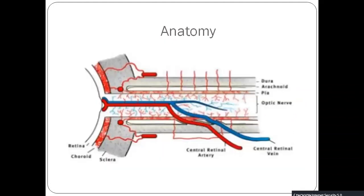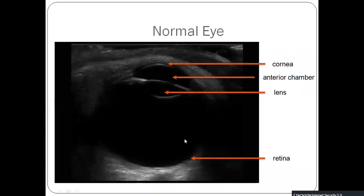As you see here, this is the eye posteriorly, and this is the anterior part of the optic nerve, which is covered by the dural sheath and the arachnoid space is here. You can see the retina, the choroid, and the sclera. With ultrasound on a normal eye, we have the cornea, the anterior chamber and lens, the posterior chamber, the retina, and the area where the optic nerve is coming.